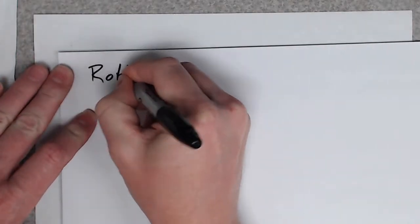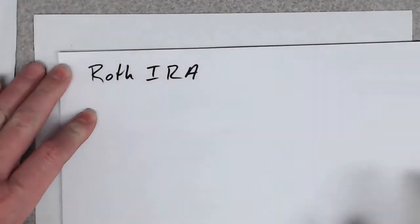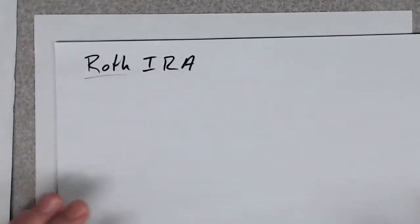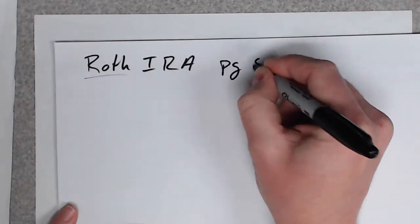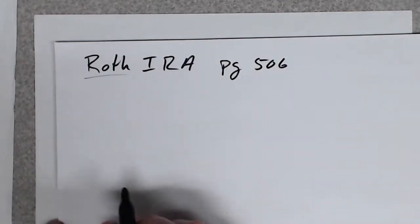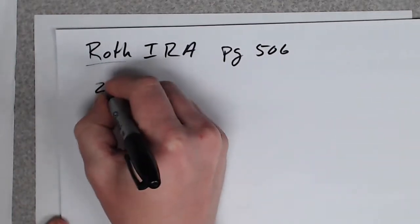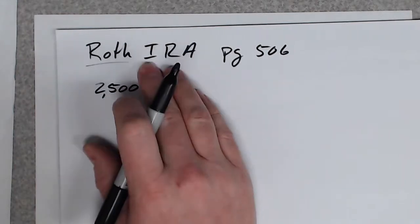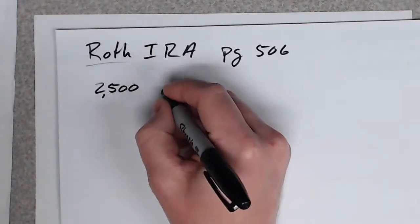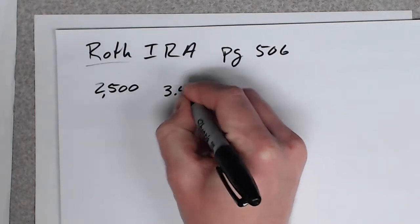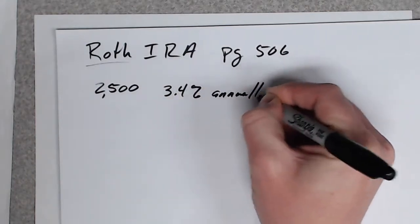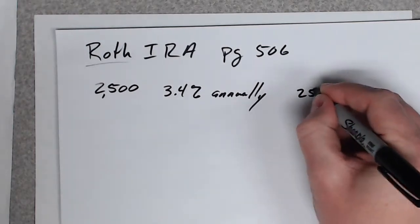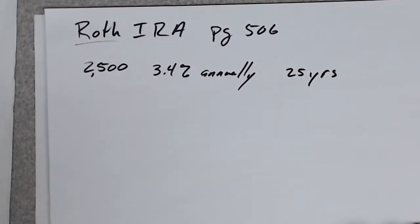So, one good type of annuity is a Roth IRA. It's a retirement account. The Roth part has to do with taxes, where you pay taxes before and don't have to pay it. You can read all about that on page 506. But the question that I was posed here by a student was that you had $2,500. You're going to pay $2,500 a year into this Roth IRA. And this Roth IRA is guaranteed to pay 3.4% annually. And you're going to do this for 25 years. And you want to know how much is going to be in there.